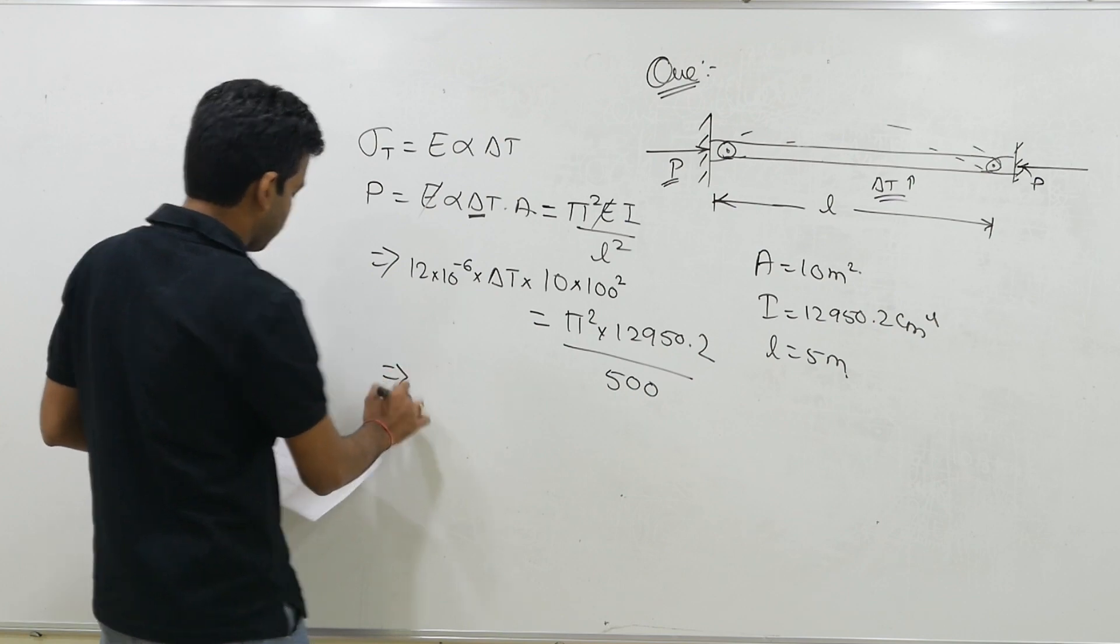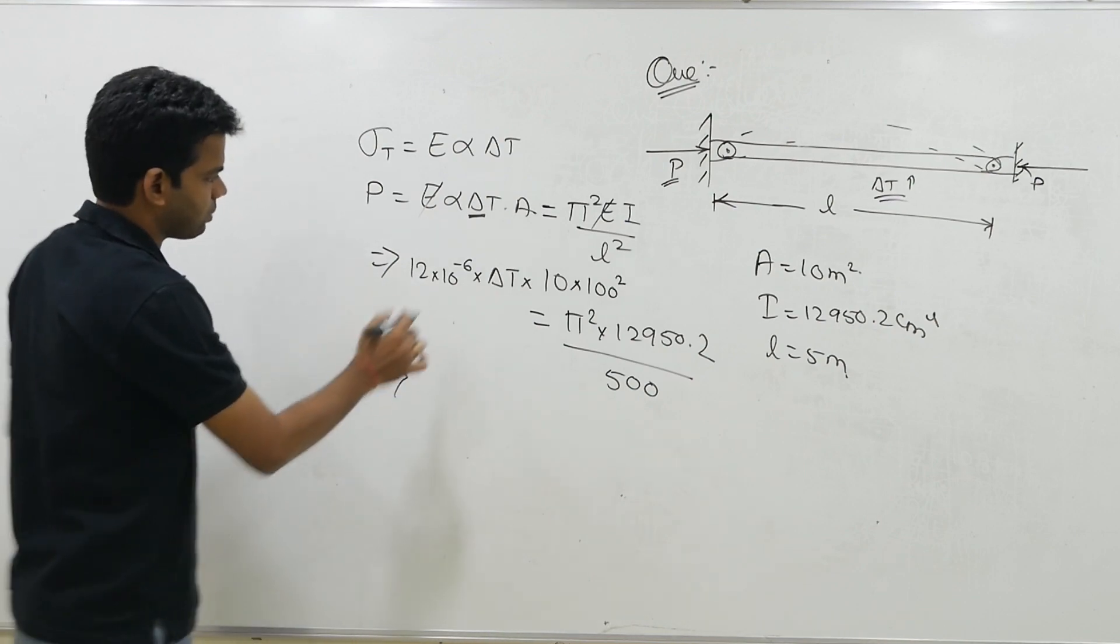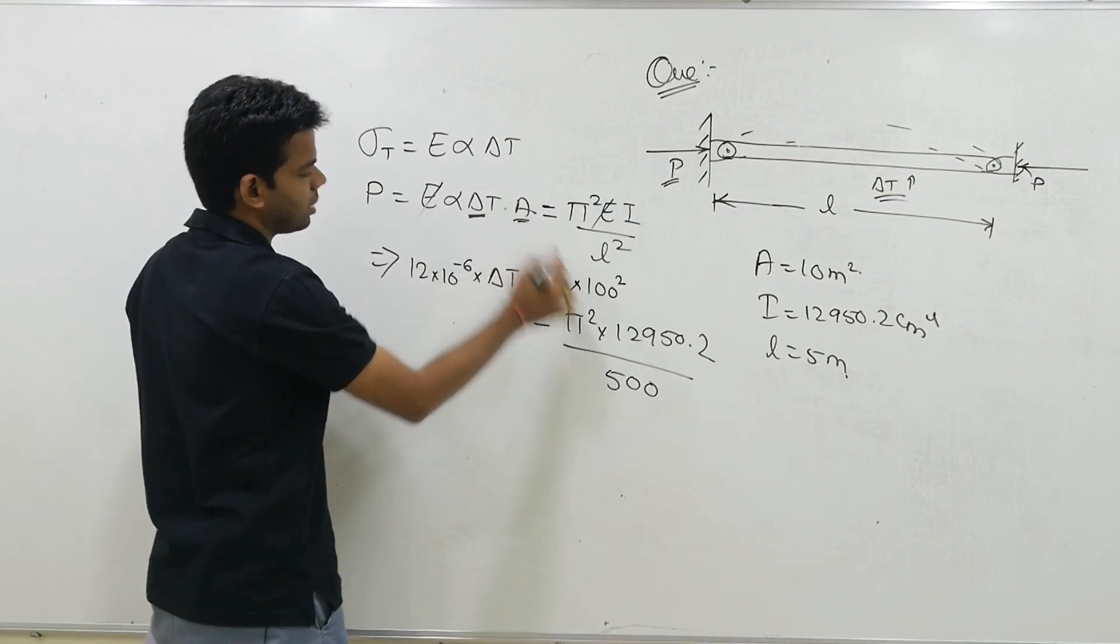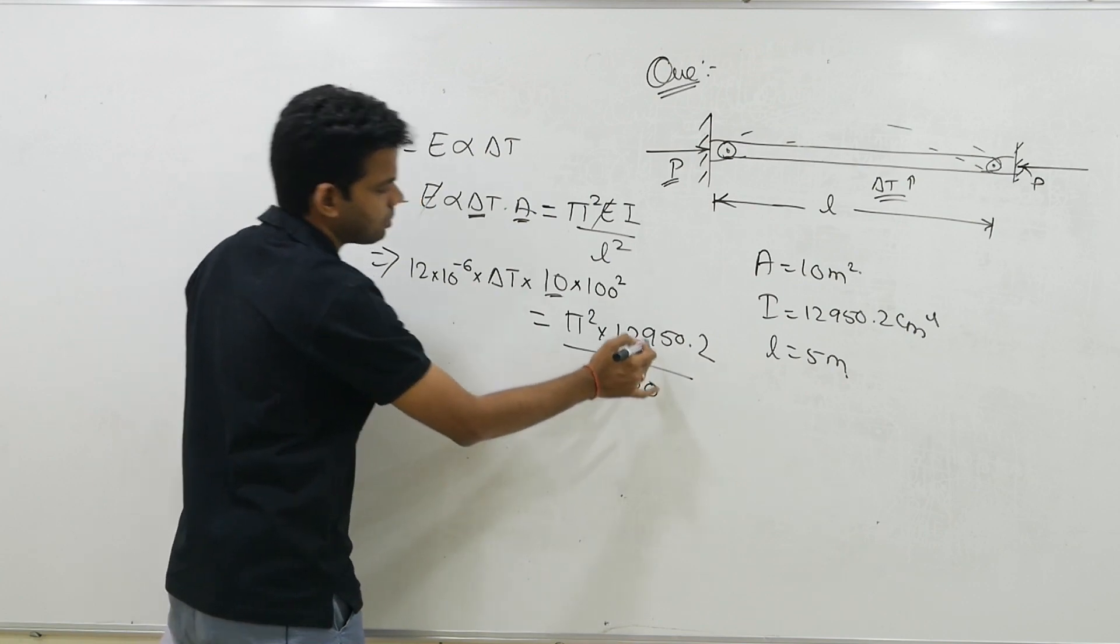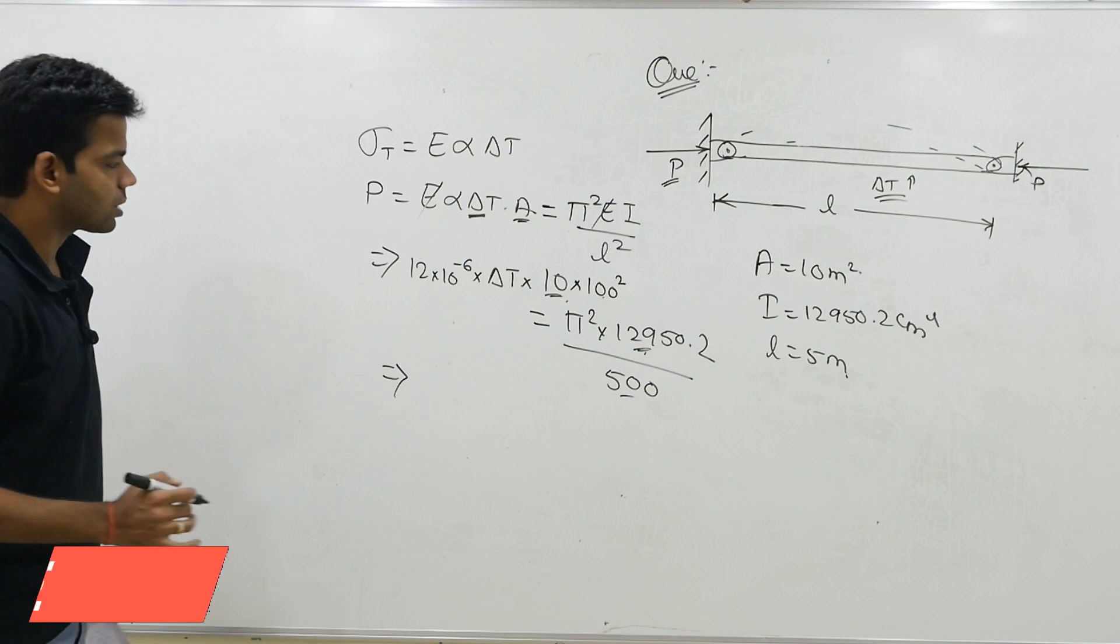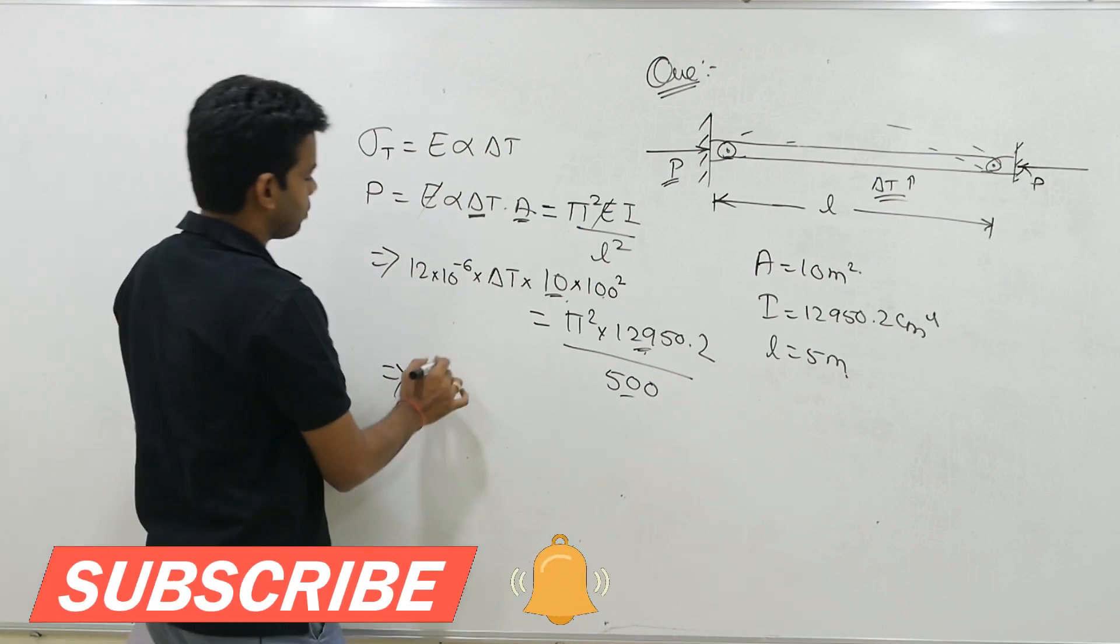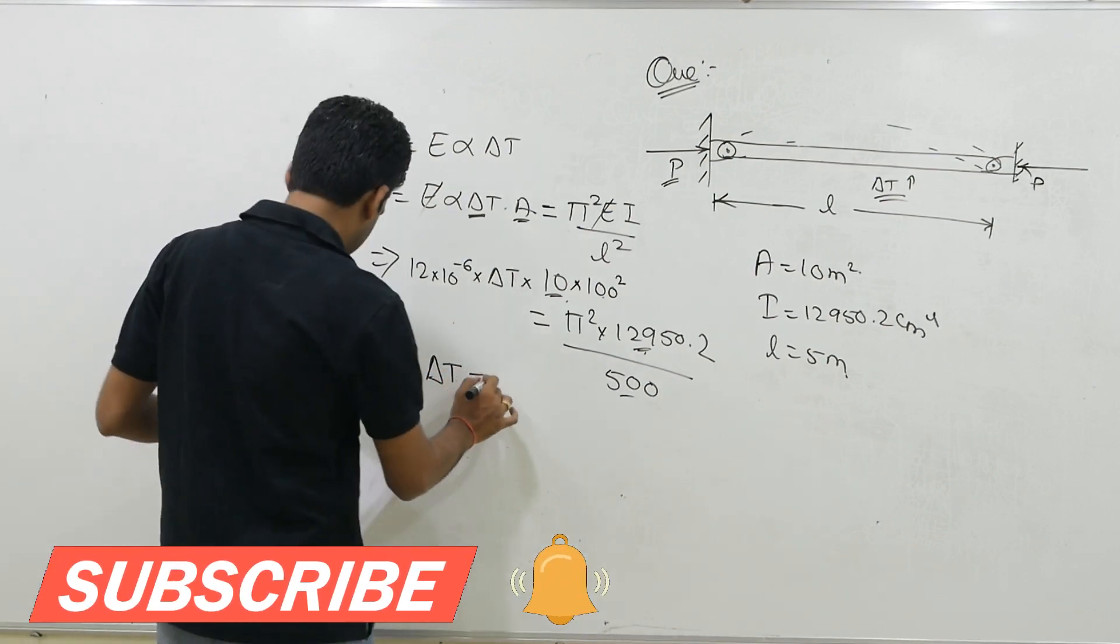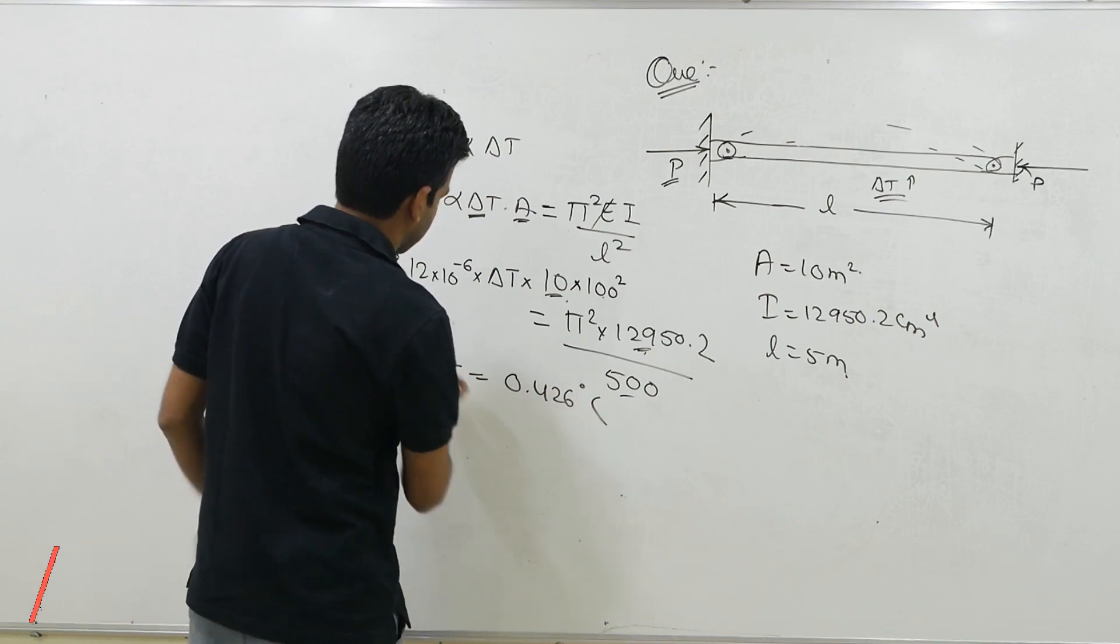So from here we will get what? Now why we have converted this to centimeter? Kyonki yahan par bhi hamne I already centimeter to the power 4 mein diya hua hai. To isliye hamne isko bhi aur isko bhi sab ko centimeter mein convert kar diya. Now further from here you can determine the value of this del t which will be equal to 0.426 degree centigrade.